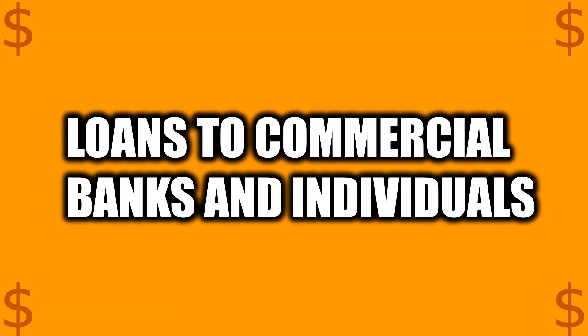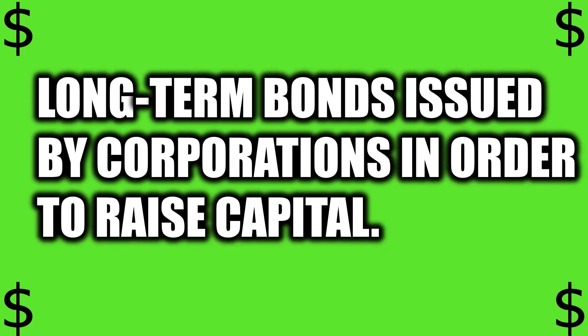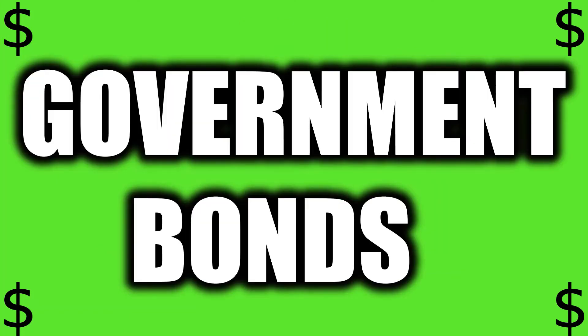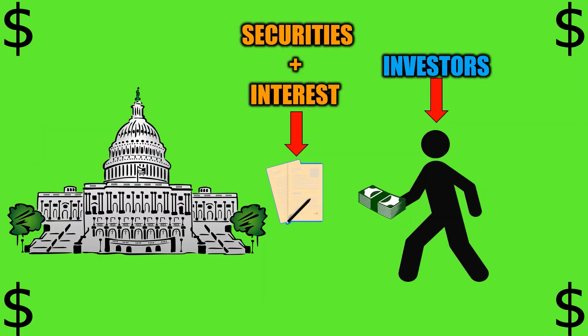Another subset of capital market securities is called bonds, which is similar to loans. Corporate bonds are long-term bonds issued by corporations in order to raise capital. In buying these bonds, investors would virtually be loaning money in exchange for receiving interest payments over time. Government bonds are long-term bonds issued by governments to pay for spending commitments, and investors who buy these bonds are rewarded with interest.